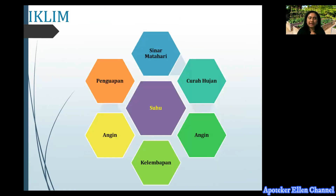Untuk yang pertama adalah iklim. Iklim berarti ada suhu — suhu dari tanaman perlu diperhatikan, kemudian sinar matahari seperti apa, karena ada beberapa tanaman obat yang tidak membutuhkan sinar matahari sama sekali, sehingga perlu diperhatikan dalam peletakan atau penanaman tanaman obat tersebut. Curah hujan juga penting — ada tanaman yang butuh banyak air, ada yang tidak. Angin juga dapat mempengaruhi, terutama ketika tanaman memiliki batang yang tidak terlalu kokoh sehingga gampang sekali menjadi patah atau rusak. Kelembapan dan penguapan juga perlu diperhatikan — ini faktor-faktor dari unsur iklim dalam pembudidayaan toga.